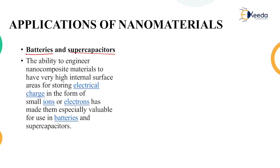Batteries and supercapacitors: the ability to engineer nanocomposite materials to have very high internal surface area for storing electrical charge means nanomaterials can be used in making batteries. These batteries have a lot of space to store a large amount of electrical charge, and because of this they can turn into long-lasting batteries.